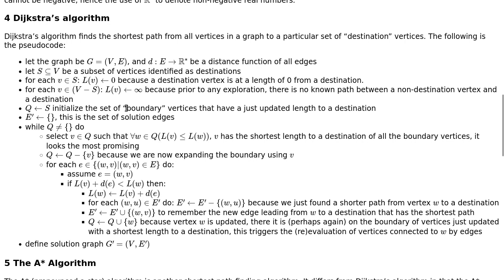We also have a local variable Q, initialized to all the destinations. This is where our algorithm differs significantly from CISP 430 — we start with the destinations, but in CISP 430 they start with the origin. We also keep track of another set called E prime, which starts as an empty set. That's how we initialize the whole thing.